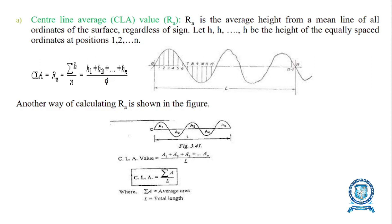The second method is the RMS average method. It is the geometrical average of the ordinates of the profile above the mean line. The mean line is located such that the sum of the areas above equals the sum of areas below the line. Roughness is measured as the average deviation from the nominal surface. The RMS value is given by: RMS = √(Σ H² / n), where H1, H2, H3, … Hn are the ordinates measured from the mean line along the sampling length L.